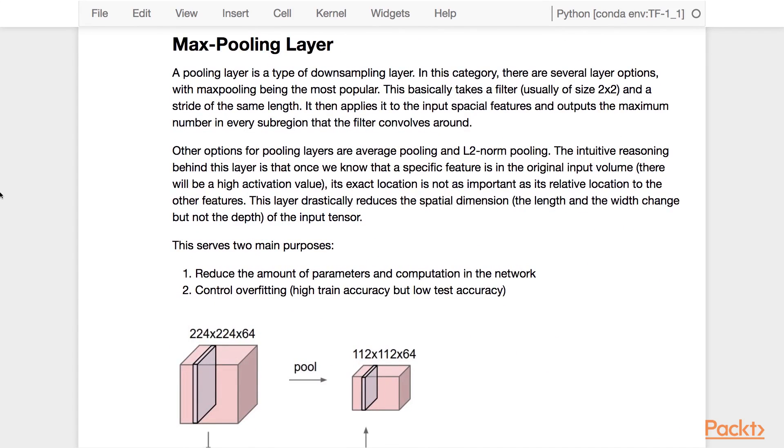Let's now look at the max pooling layer. This is a type of downsampling layer. In this category, there are several layer options with max pooling being the most popular. This basically takes a filter, usually a 2x2 filter and a stride of the same size. It then applies it to the input spatial features and outputs the maximum number in every sub-region that the filter convolves around. Other options of pooling layers are average pooling and L2 norm pooling.